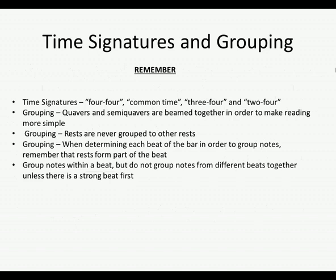To summarize time signatures and groupings: remember the four different time signatures — 4/4, common time, 3/4, and 2/4. You need to be able to recognize and write these. For grouping: quavers and semi-quavers can be beamed together to make reading simpler. Rests are never grouped to other rests. When determining each beat of the bar, remember that rests form part of those beats as well. Group notes within a beat, but do not group notes from different beats together unless there is a strong beat first.